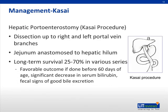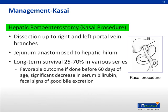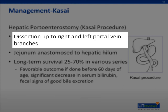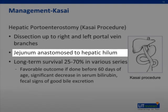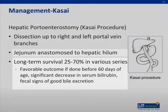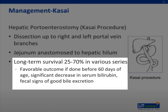One surgical management of the disease is the Kasai procedure, or hepatic portoenterostomy. To perform this procedure, a dissection is taken up to the right and left portal vein branches, and the jejunum is anastomosed to the hepatic hilum. Various series have demonstrated a long-term survival of 25 to 70%. A favorable outcome is demonstrated if done before 60 days of age, and if the child has a significant decrease in serum bilirubin and fecal signs of good bile excretion.